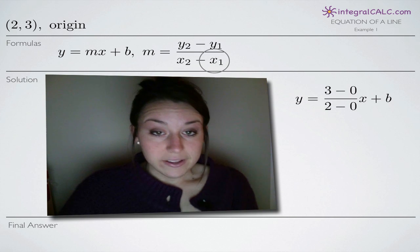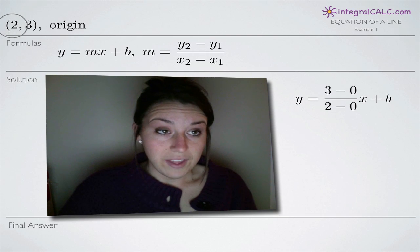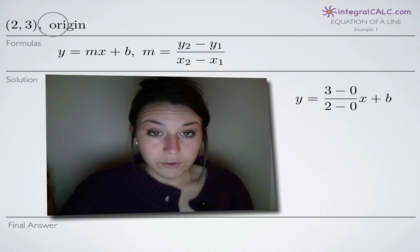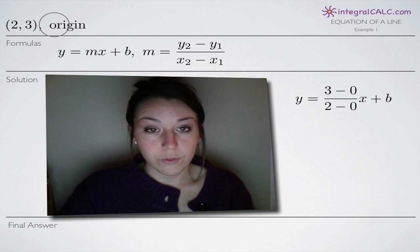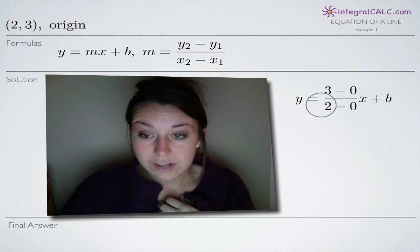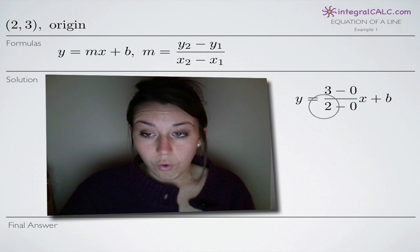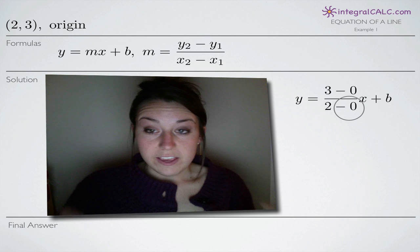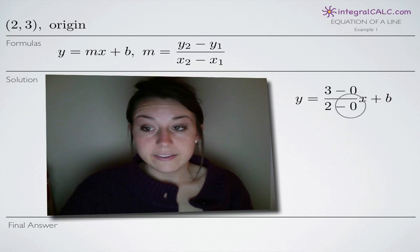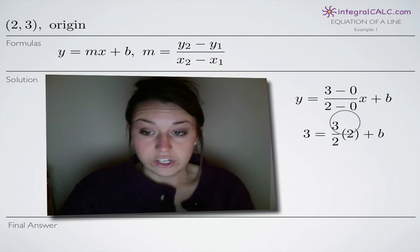For x sub 2 minus x sub 1, x sub 2 we grab from our first point and that's 2, and then subtract x sub 1, which we get from the origin, which is 0. So in the denominator, we end up with 2 minus 0. We plug that whole thing in for m, ignoring everything else for now. The easiest way is to find m first, then plug in one of the points to solve for b.